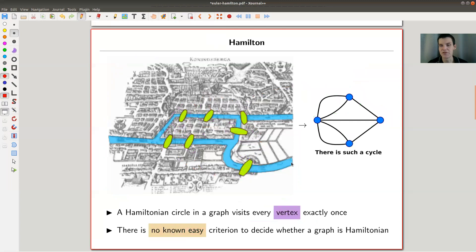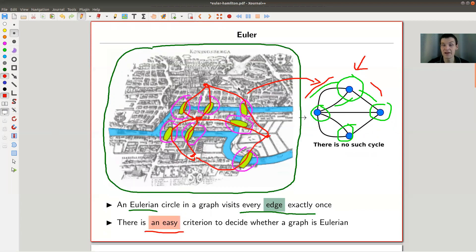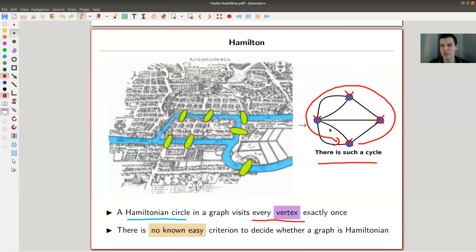A little bit later, people came up with the Hamiltonian question. Here's my same graph. I'm asking for a Hamiltonian cycle. Really the same idea, but instead of demanding that I visit every edge once, I demand that I visit every vertex once. In this case, I could start here at the bottom and go around counterclockwise. So this is an example - the Königsberg graph is Hamiltonian but not Eulerian.